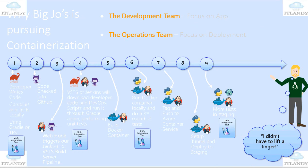Now, some of the DevOps reasons around why Biggio is pursuing containerization — what's the benefit of using containers? The development team focuses on the application, the OS focuses on deployment. From step one, the developer writes code, compiles and tests locally using Gradle, TFS, or other tools. Then the code gets checked into GitHub. Then a webhook triggers a Jenkins or VSTS build pipeline, which downloads the developer code and DevOps scripts and runs it through Gradle, performing unit testing.